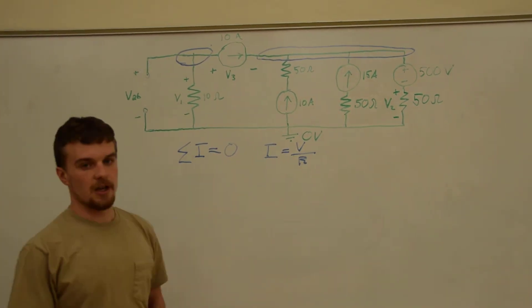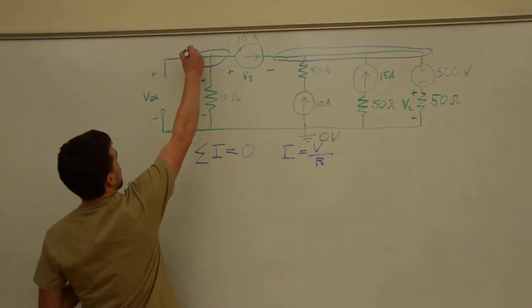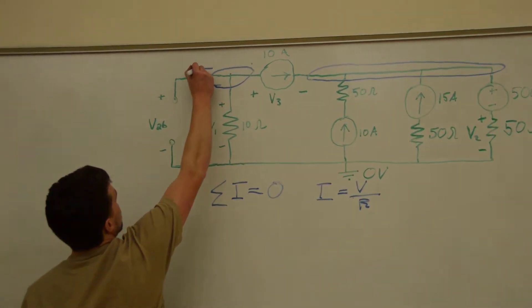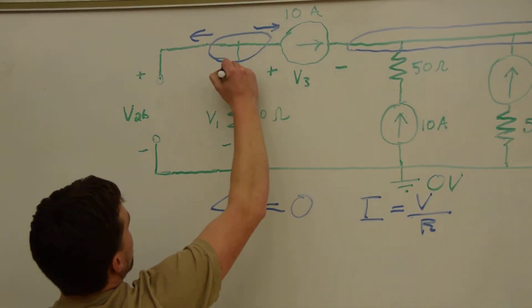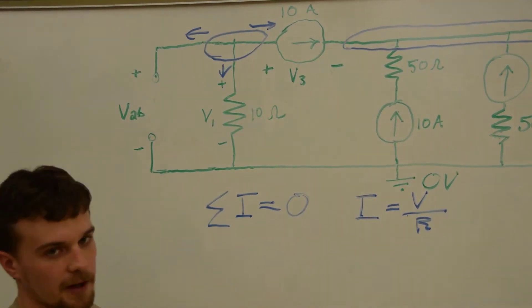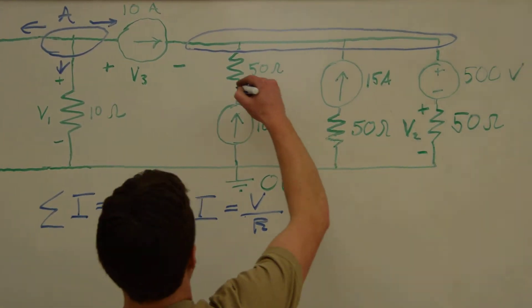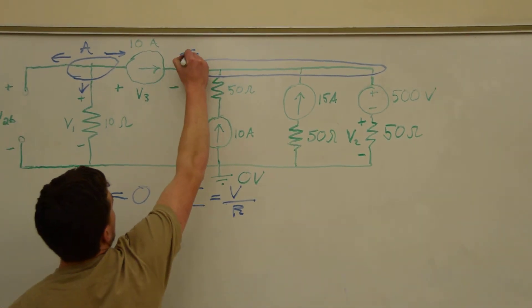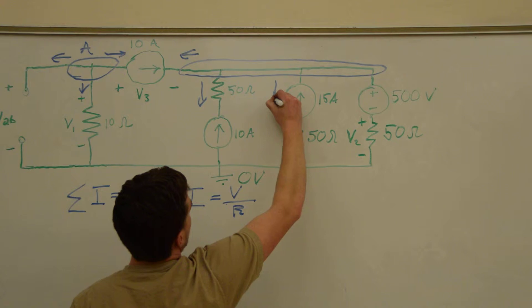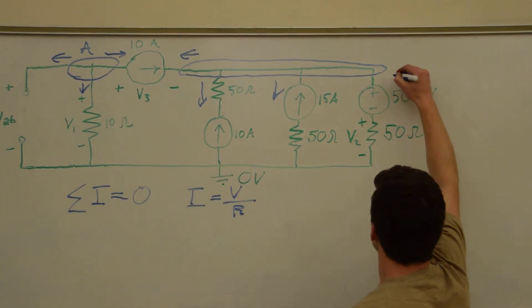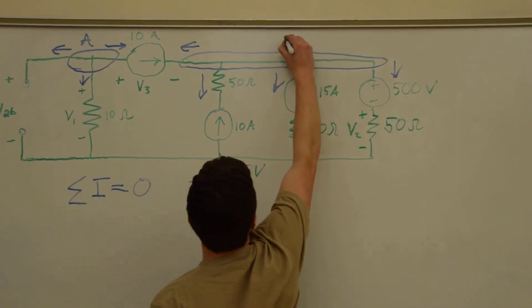Okay, so we will assign currents leaving these nodes. We'll go current here, current here, current here, and we'll call this node A. Now, we'll go current here, current there, current there, current here, and we'll call this node B.